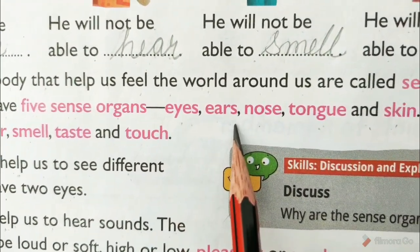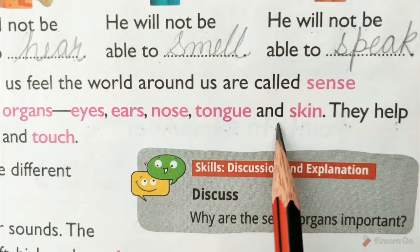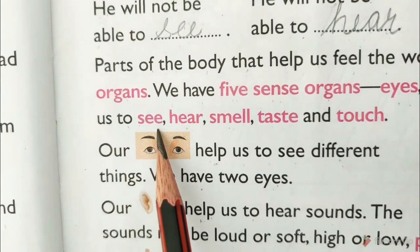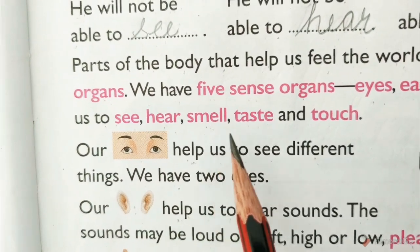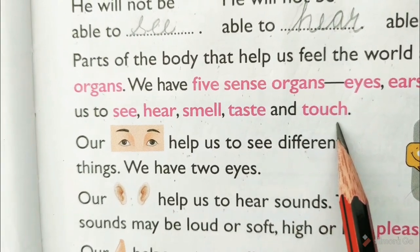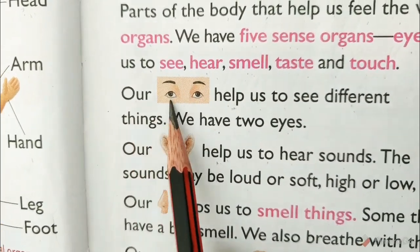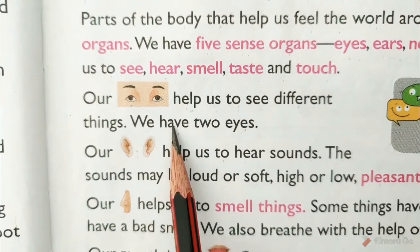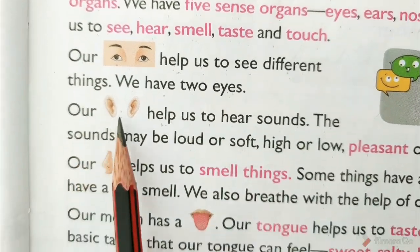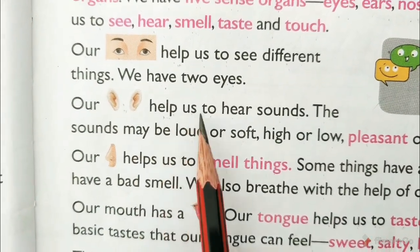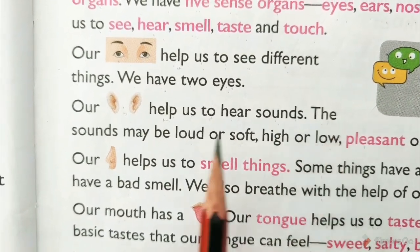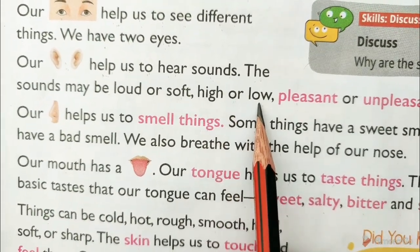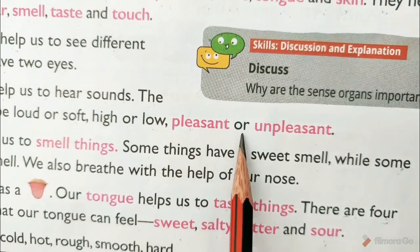Eyes, ears, nose, tongue and skin. They help us to see, hear, smell, taste and touch. Our eyes help us to see different things. We have two eyes. Our ears help us to hear sounds. The sounds may be loud or soft, high or low, pleasant or unpleasant.